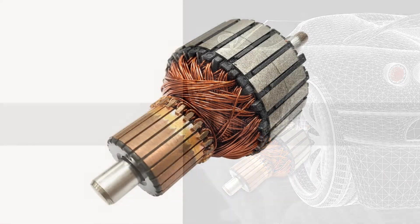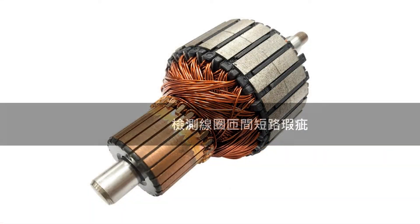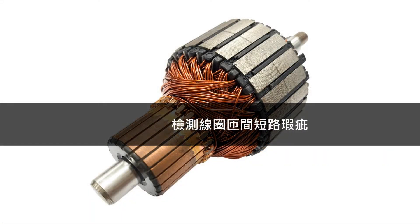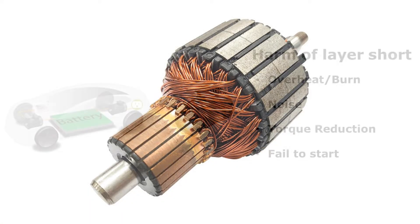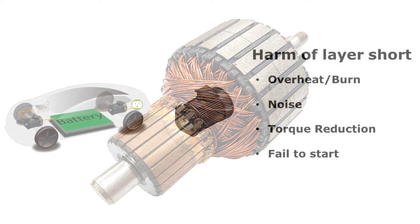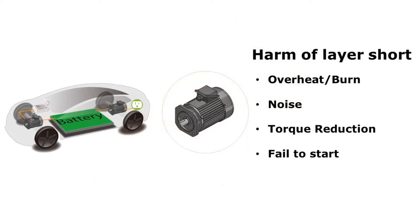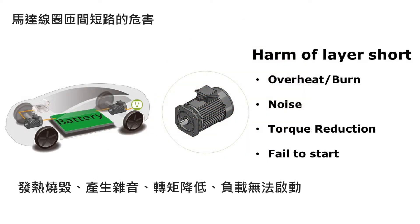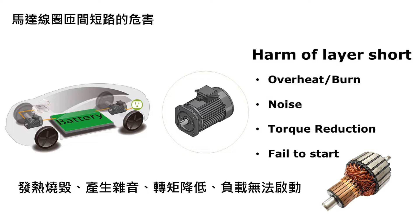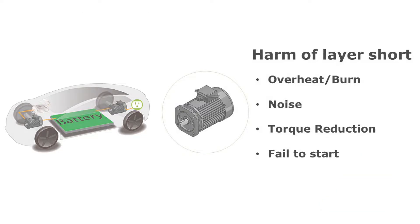A short might happen while the current is passing through a defective winding coil. The coil will cause a short when the insulation has a problem. If this happens, the magnetic field will be changed, which will affect the efficiency of the whole system.